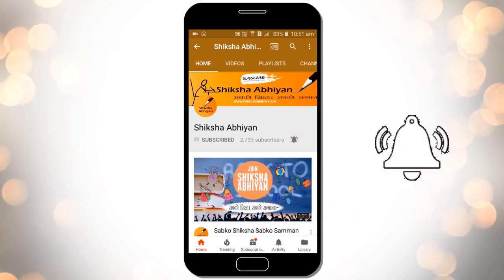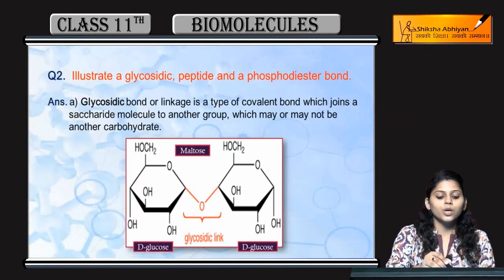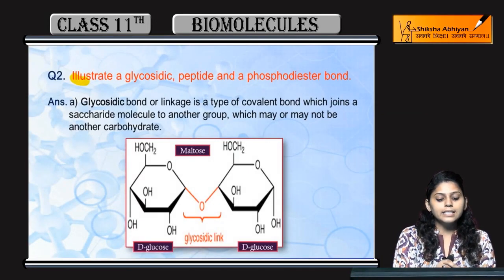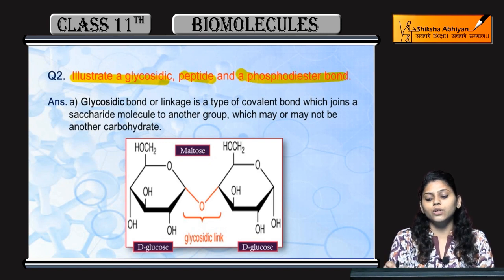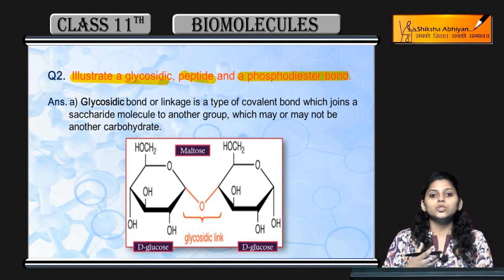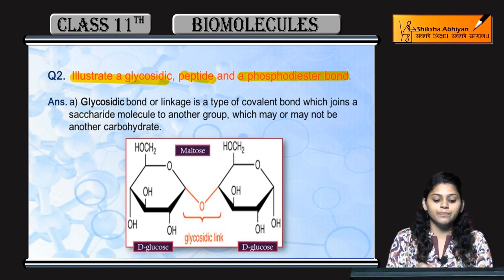Question 2: Illustrate a glycosidic, peptide, and a phosphodiester bond. जो glycosidic, peptide bond और phosphodiester bonds हैं, ये तीनों covalent bonds हैं।